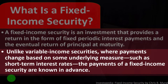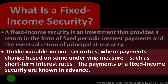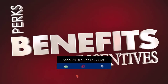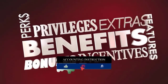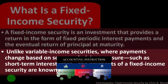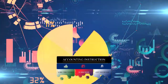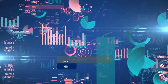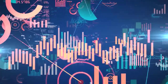Unlike variable income securities, where payments change based on some underlying measure such as short-term interest rates, the payments of a fixed income security are known in advance. That has benefits because you have more certainty about what the payments will be, although you don't have certainty about what the market will be doing — so whether that fixed payment is good or bad will depend in part on future market rates.